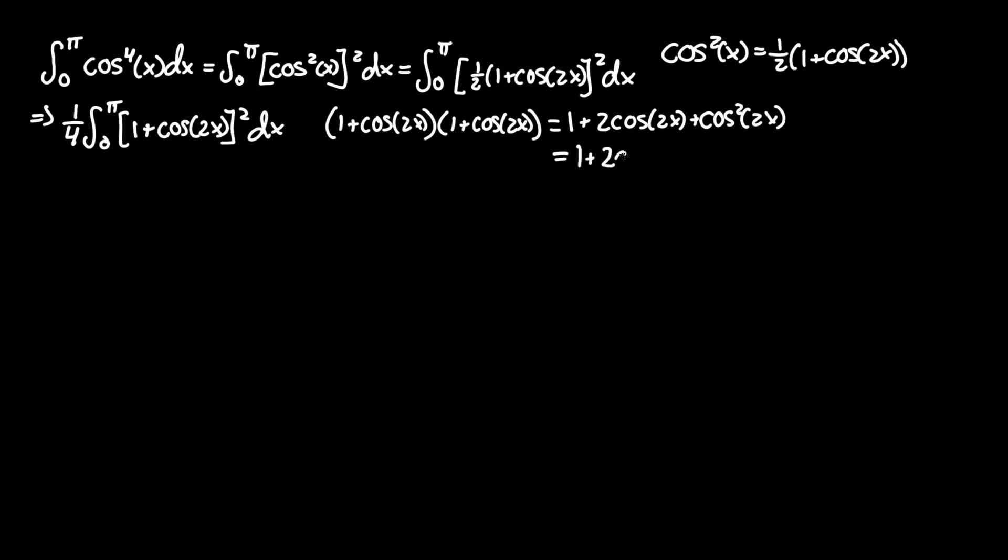So 1 + 2cos(2x) + 1/2(1 + cos(4x)) this time, since 2 times 2x is 4x.